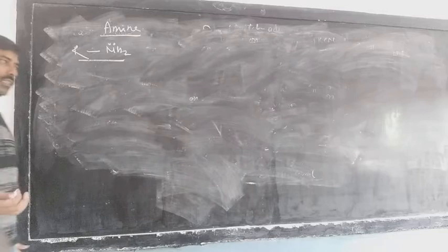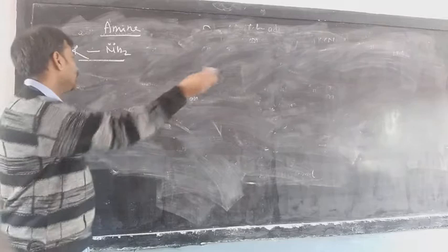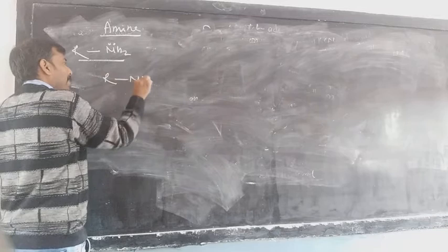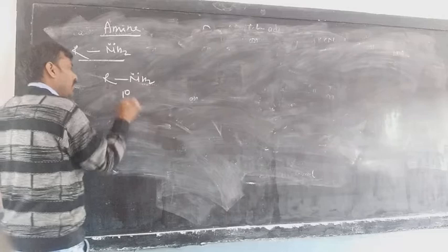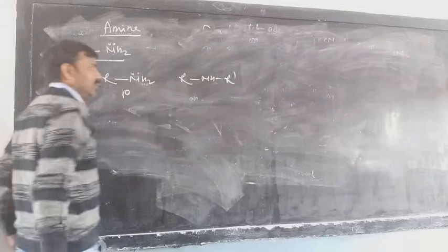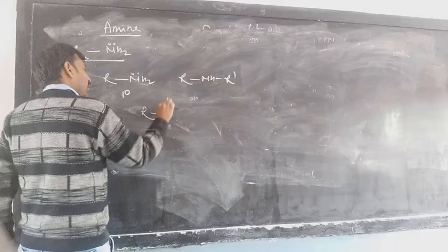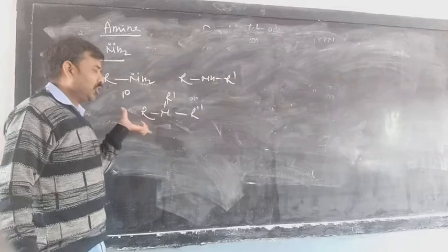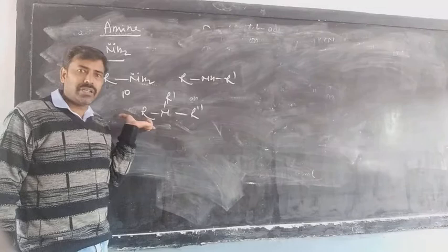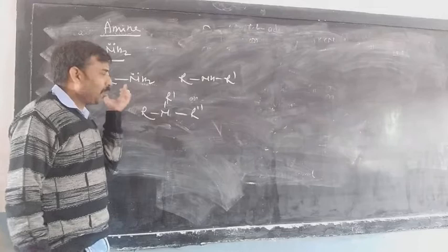When you see how many types of amine on the basis of the degree of the compound, there are three different types. The first one, R-NH2, having one alkyl group, is considered as primary amine. Having two alkyl groups, R-NH-R', is called secondary amine. And R-N-R' is called the tertiary amine. Unlike the first chapter, here it is not the beta carbon but the number of alkyl groups which suggests the degree of the compound.